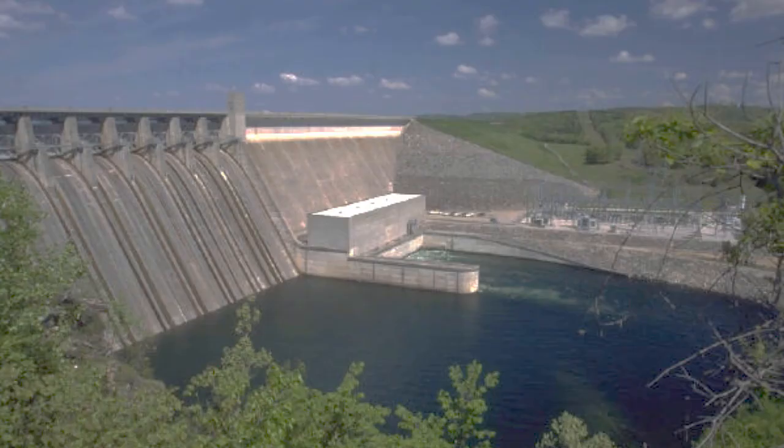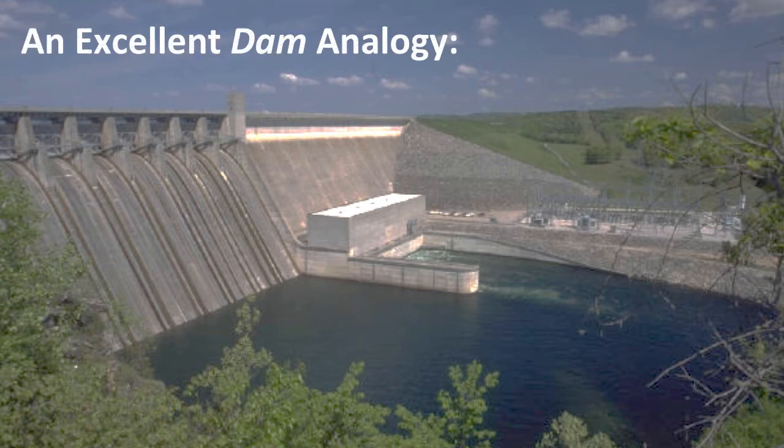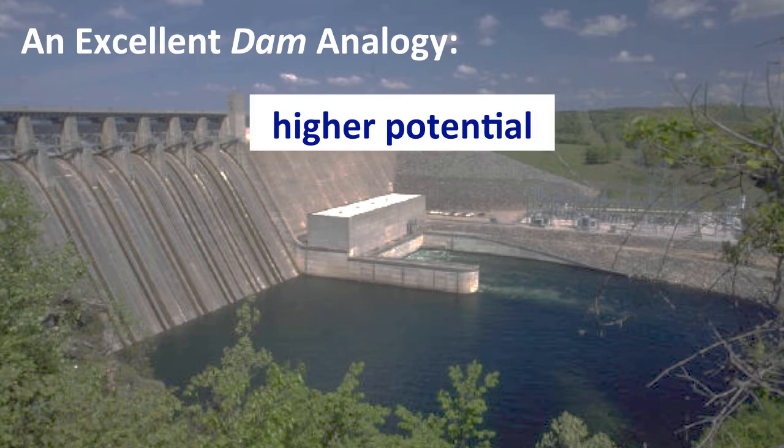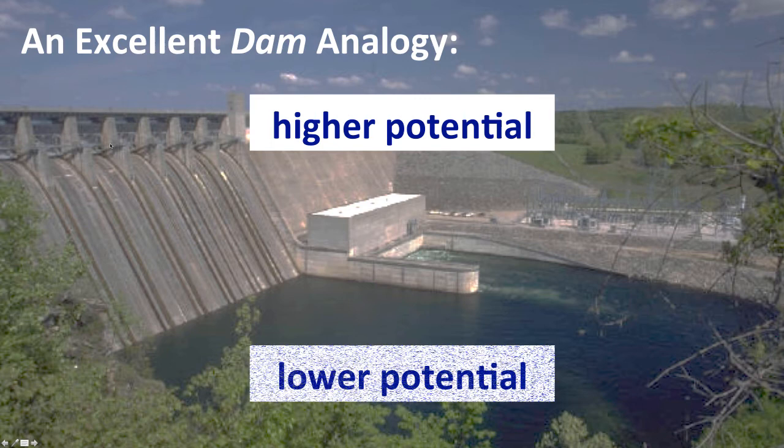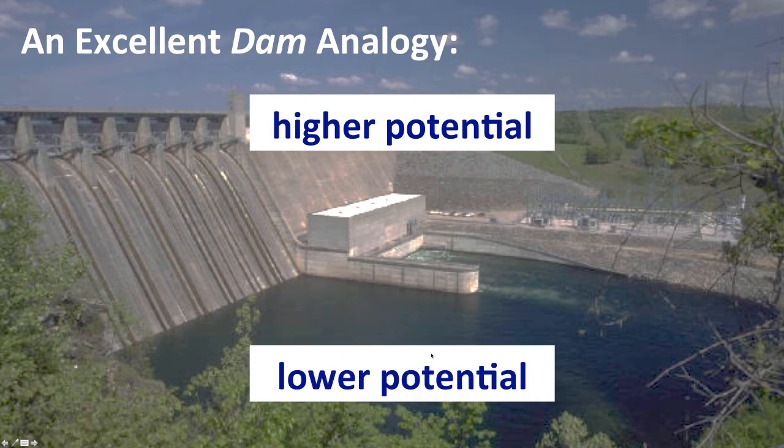When we talk about cell potential or free energy change, especially in electrochemical processes, it's nice to have a way of thinking about this. And the typical analogy that's used is of water and water energy and water flow. So here we have a dam, and the water at the top of the dam that's being held back by the dam is at a higher potential than the water at the bottom of the dam. And here you can think of higher potential and lower potential in terms of potential energy.